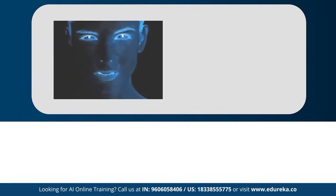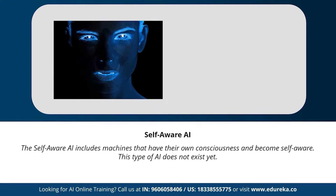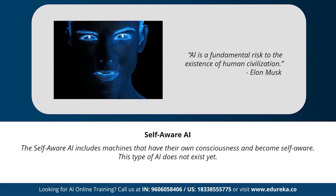The last type is self-aware artificial intelligence. This is the stage where machines have their own consciousness and become self-aware. This type of AI is a little far-fetched, but achieving a stage of super intelligence might be possible in the future. Geniuses like Elon Musk and Stephen Hawking have constantly warned us about the evolution of AI. Do you think we'll ever reach the stage of artificial super intelligence?